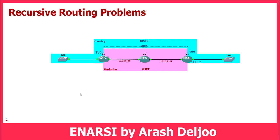Here we have a simple scenario. We have one underlay with Router1, Router2, and Router3, and we have configured OSPF on the underlay. I have also configured a GRE tunnel between Router1 and Router3. Because of that, we have this overlay — the blue line is our overlay — which creates one logical link between Router1 and Router3.